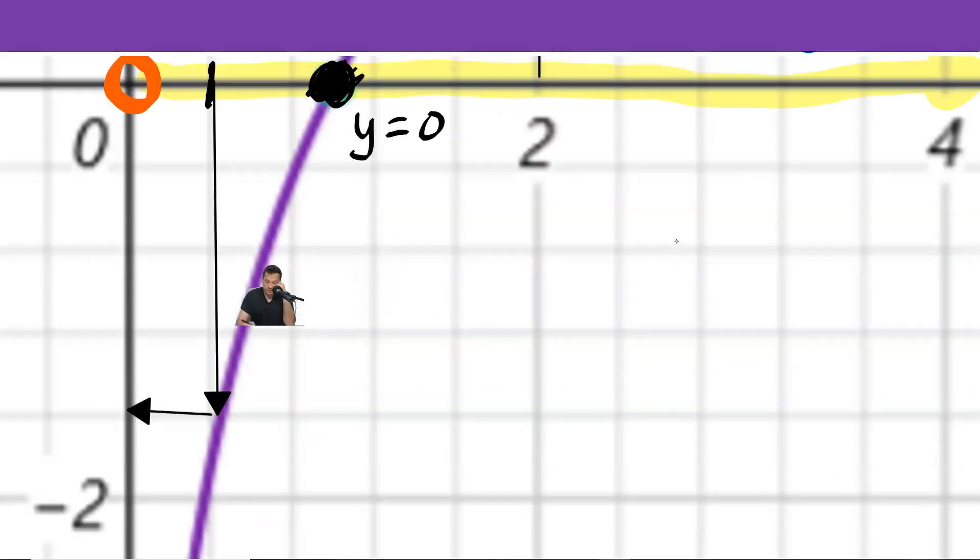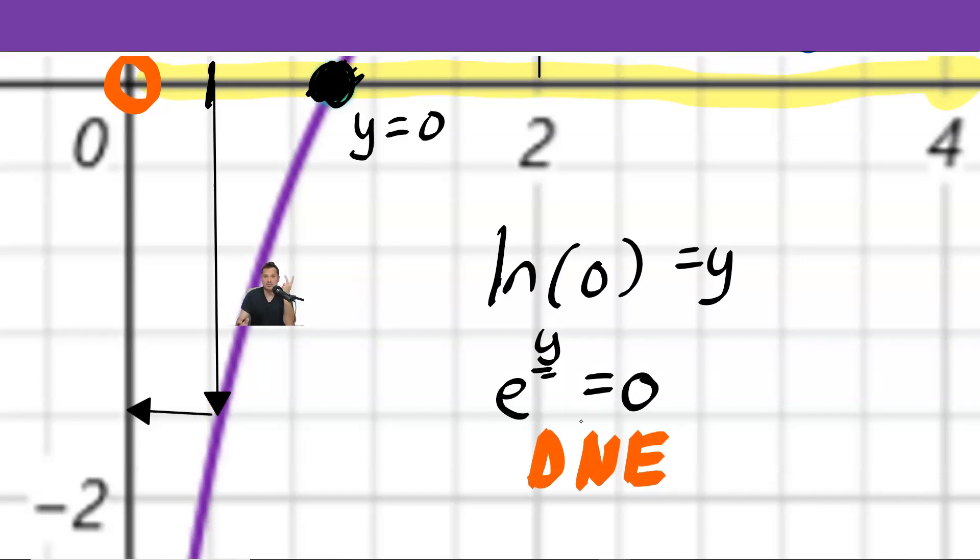Why is that the case? Let's look at a simplified case. Imagine you just try to do ln(0). What this is saying, imagine this is your y. What this is saying is that e raised to some magical value of y can be turned into 0, when you look at it in exponential form. Not possible. So for that reason, DNE as 0 itself.